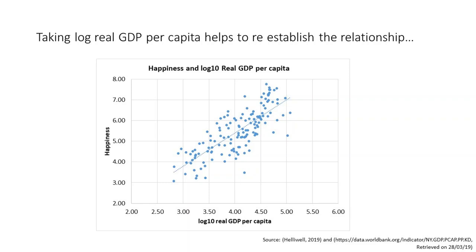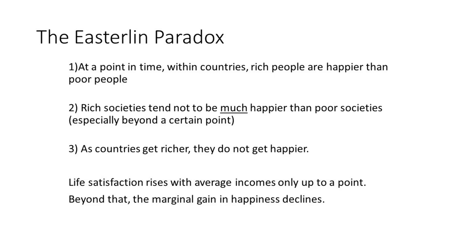We still haven't really resolved the paradox, though, because points one and three still don't make sense together. Easterlin himself attempted to resolve the paradox by talking about the relative income hypothesis — the idea that we actually measure our living standards in terms of how we compare to those around us, not our income in absolute terms. So as everyone gets richer, overall levels of happiness won't increase because people don't feel richer in relative terms, even if they are richer in absolute terms.